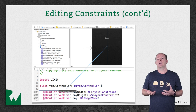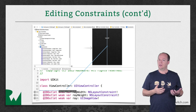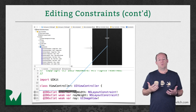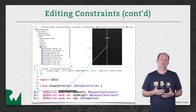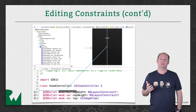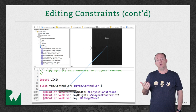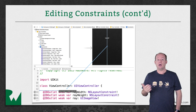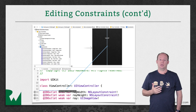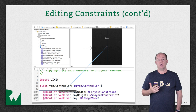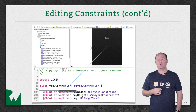Those are the ways you can edit a constraint in Interface Builder at design time. But what if you want to edit a constraint at runtime? Once a constraint has been activated on a view, the only thing you can change about it is the constant. But you can create an outlet to the constraint just like you would to a view, and then at runtime you can change the constant of the constraint.